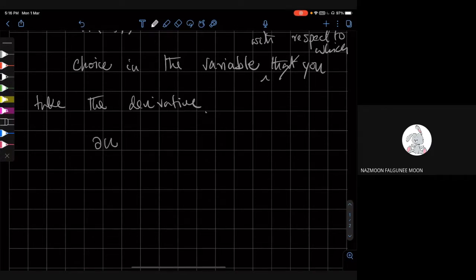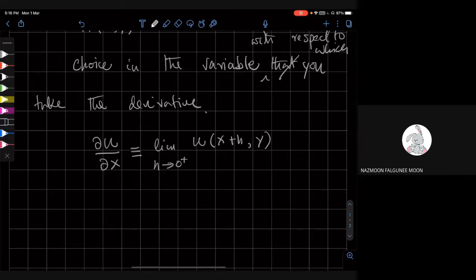So the partial derivative of this function, u, with respect to x, we know the definition is the limit of a small parameter, say h, going to zero from the positive direction, and u of x plus h, y minus u of x, y divided by h, right? So this is the definition of partial derivatives.